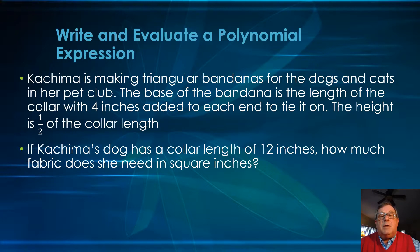We're told that Kachima is making triangular bandanas for the dogs and cats in her pet club. The base of the bandana is the length of the collar with four inches added to each end to tie it on, and the height is one half of the collar length. Let's read: how much fabric does she need in square inches? That's what we're eventually going to have to solve. Let's break this down.